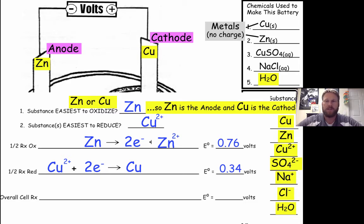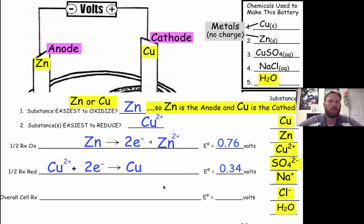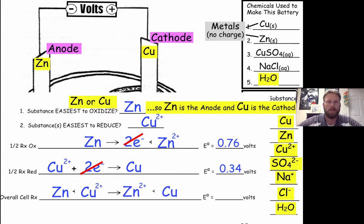We now know the substances being oxidized and reduced. This means copper sulfate is our reducing solution and sodium chloride is our electrolyte. To get the overall reaction that occurs in the battery, we just add the half reactions together. Since the number of electrons lost and gained are equal, those electrons cancel.